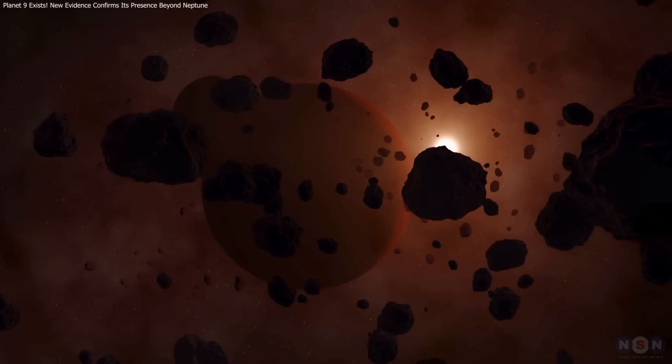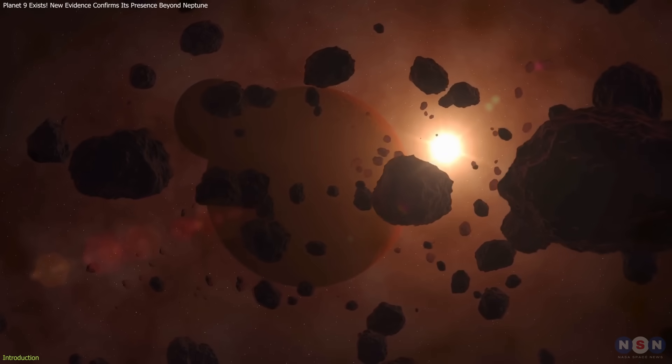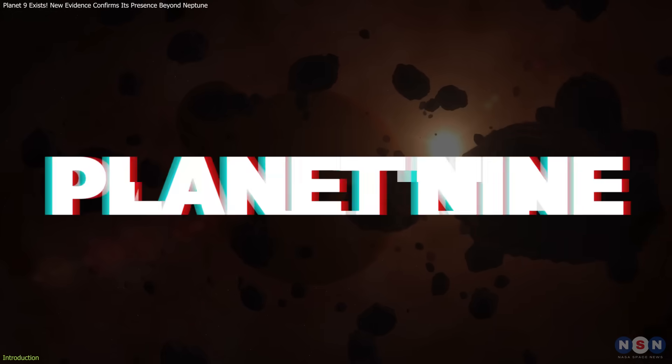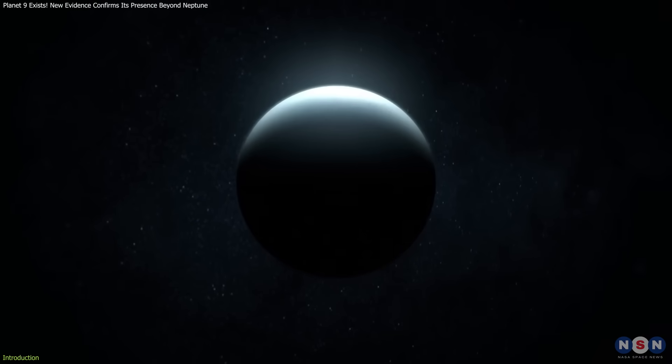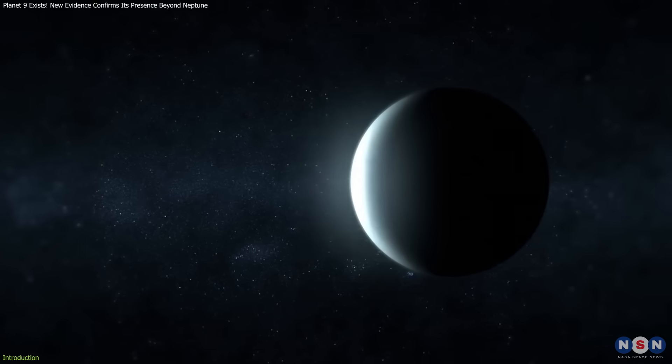Astronomers have long been intrigued by the possibility of a hidden planet in our solar system, dubbed Planet Nine. This hypothetical planet could be lurking far beyond Neptune, possibly five times larger than Earth.